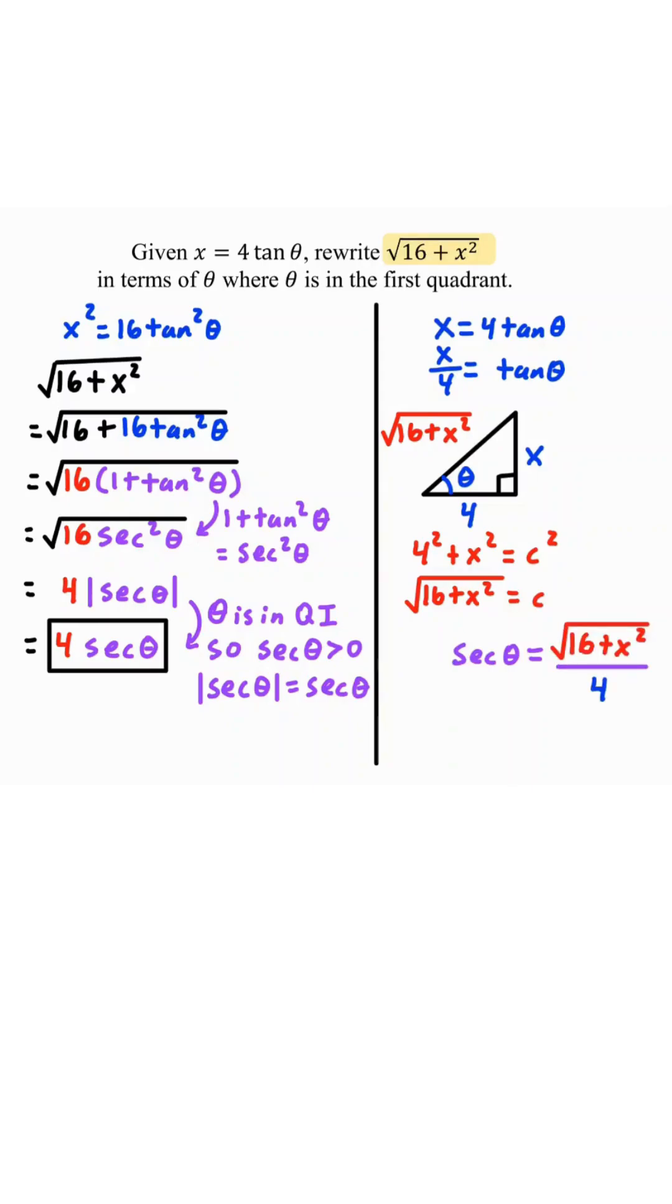So we'll use secant of theta, which equals square root of 16 plus x squared over 4. Multiply both sides by 4, we get 4 secant theta.